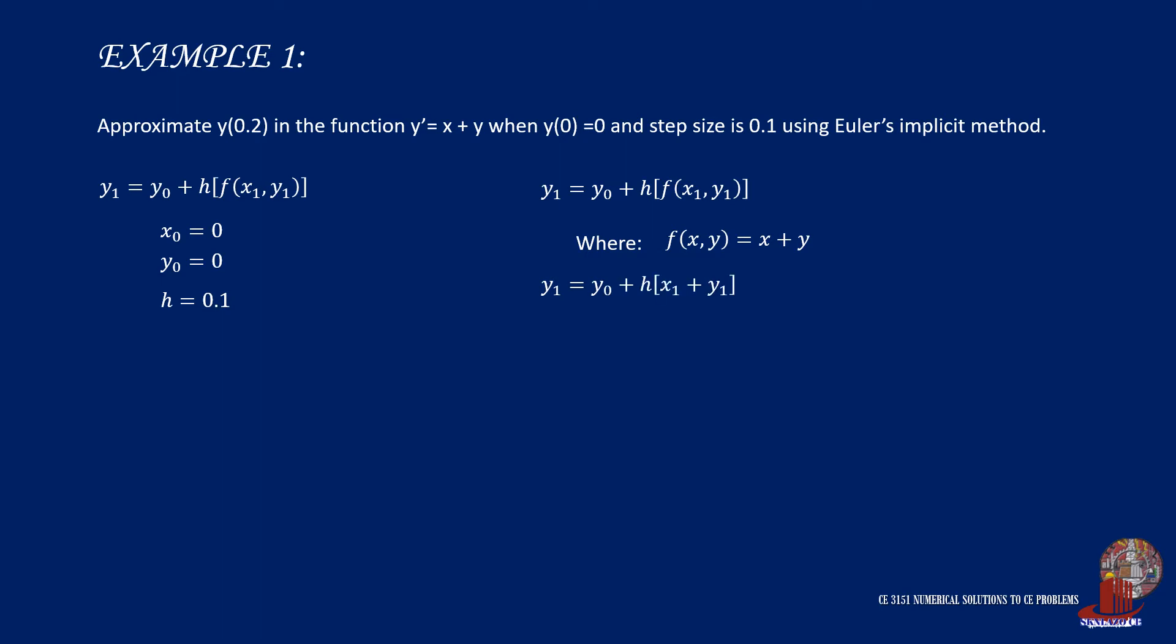Thus, y1 will be taken as y0 + h times the function of (x1 + y1). Expand the function by distributing h, and then collect all y1 by moving h·y1 to the other side of the equation. Now factor out y1 from the expression.